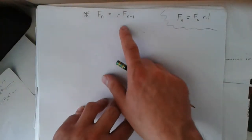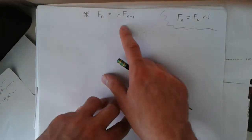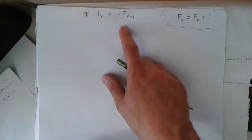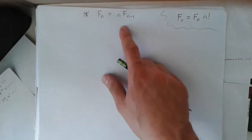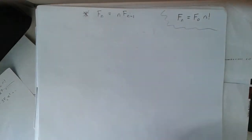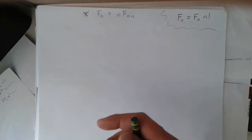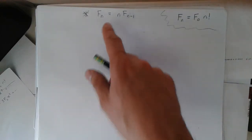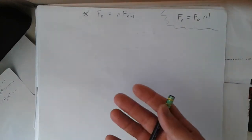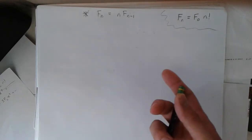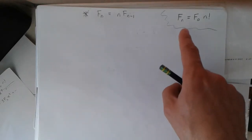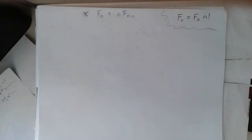Here I have another recurrence relation I'm going to solve using a generating function. This is actually the same example as in my very first video, where I solved it using inspection and induction to verify the result. I found that f of n is equal to n factorial times an arbitrary constant, which represented the zeroth term of the sequence.